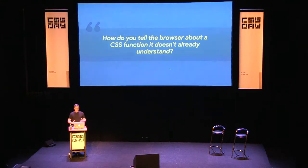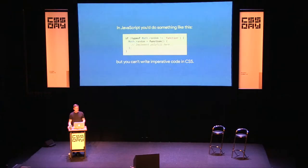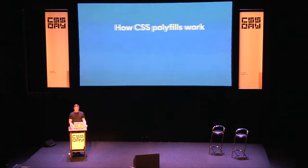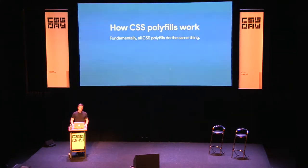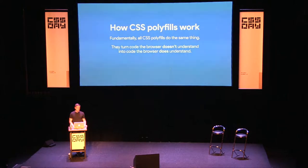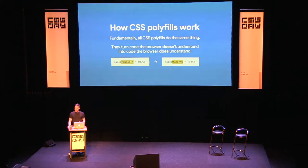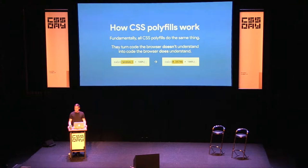The question is: if this feature doesn't exist in the browser, how do you tell the browser about it? How do CSS polyfills fundamentally work? In JavaScript it's flexible — you can write `if` statements and assign a function to a native variable. You can't do this in CSS. All CSS polyfills today do the same basic thing: they rewrite code the browser doesn't understand into code it does. So you pre-compute the random value and give the browser something it recognizes.